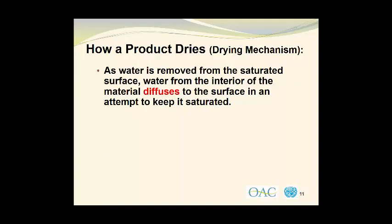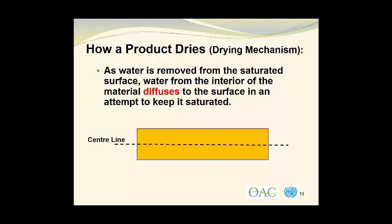As water is removed from the saturated surface, water from the interior of the material diffuses to the surface in an attempt to keep it saturated. Here we have the material represented in this diagram by the orange rectangle, with a center line drawn on it. We have moisture diffusing from the center of the material to the outside surface where it forms this pool and gives us a saturated surface.